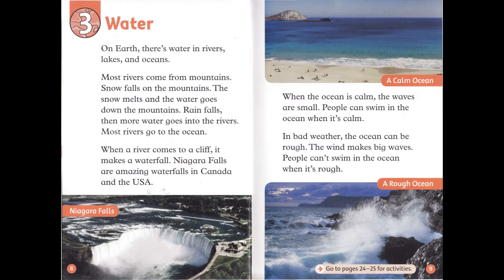Chapter 3: Water. On Earth, there's water in rivers, lakes, and oceans. Most rivers come from mountains. Snow falls on the mountains, the snow melts and the water goes down the mountains. Rain falls, then more water goes into the rivers. Most rivers go to the ocean.